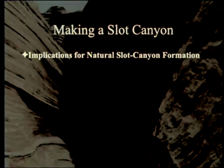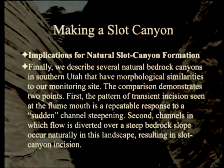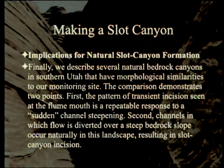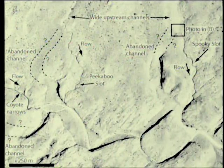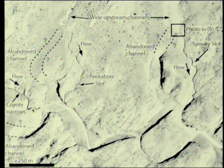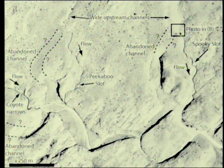Implications for natural slot canyon formation: the authors describe several natural bedrock canyons in southern Utah with morphological similarities to their monitoring site. The comparison demonstrates two points: first, the pattern of transient incision seen at the flume mouth is a repeatable response to a sudden channel steepening; second, channels in which flow is diverted over a steep bedrock slope occur naturally in this landscape, resulting in slot canyon incision. Special attention is paid to Spooky slot canyon. All the canyons appear to have an abandoned channel next to them, with sand dunes that may have blown over and blocked the standard channel.